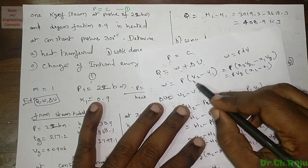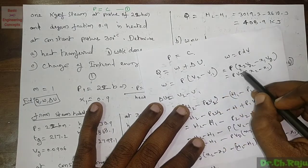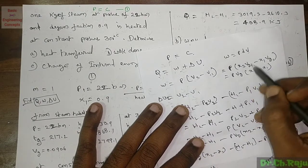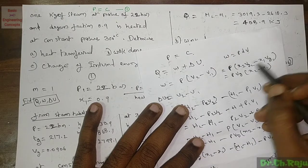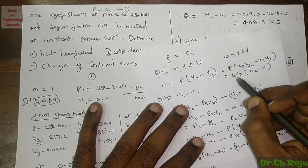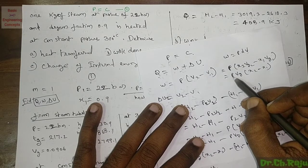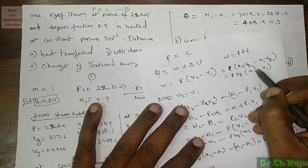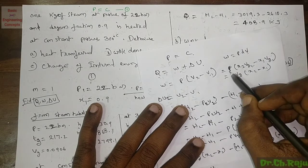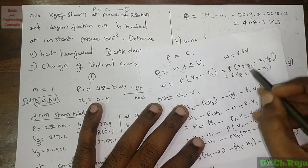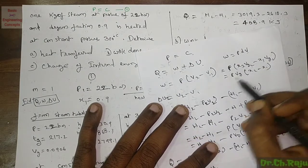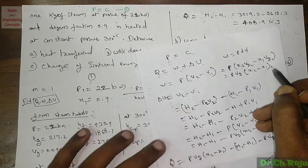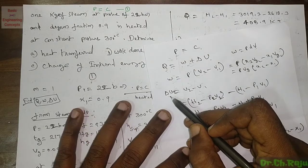The volumes V₂ and V₁ can be written in terms of dryness fractions as x₂·Vg₂ minus x₁·Vg₁. At constant pressure, the specific volume Vg is equal at the same pressure, so this simplifies to Vg(x₂ - x₁).